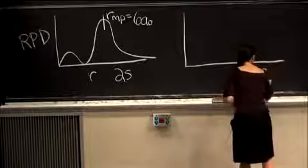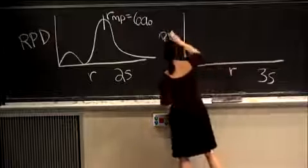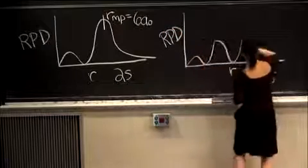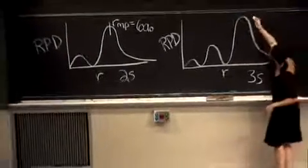We can also look at this in terms of the 3s orbital. And in this case we have a graph that looks something like this, so you can draw that into your notes.